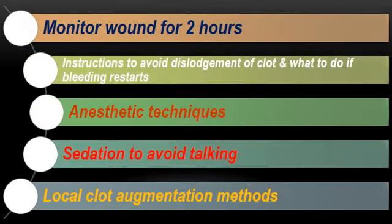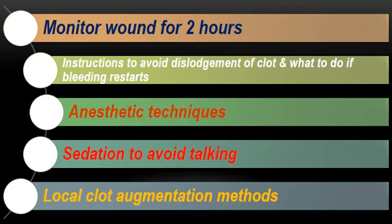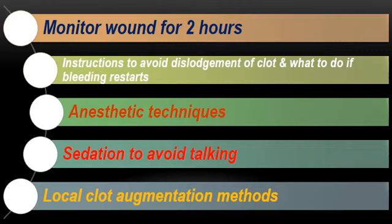Post-operatively, monitor the wound for two hours and give clear instructions to the patient: avoid dislodgement of the blood clot, avoid hot food and beverages, avoid vigorous mouth rinsing, and know what to do if bleeding restarts. Regarding local anesthetic techniques, all nerve block techniques should be avoided. Some authors prefer local infiltration; others recommend only periodontal ligament injection. Some patients may need sedation, as talking increases salivation, and saliva contains fibrinolytic agents that can cause fibrinolysis of the blood clot after surgical manipulation.